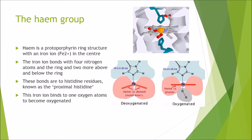The heme group is a protoporphyrin ring structure with an iron atom at the centre, as shown in the diagrams. The iron bonds with 4 nitrogen atoms in the ring, and 2 more positions above and below the ring. These positions above and below are occupied by 2 histidine residues. The one physically bonded to the iron is called the proximal histidine, and this helps allow it to bind oxygen atoms and become oxygenated.